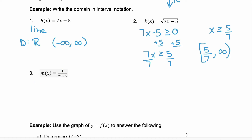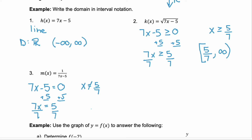Example 3 has a rational expression, so the domain cannot include anything that makes the denominator 0. We set the denominator equal to 0 and solve: add 5 to both sides, 7x equals 5, divide by 7, so x equals 5 sevenths. That's our restriction — x cannot equal 5 sevenths. The domain is from negative infinity to 5 sevenths (parenthesis), union 5 sevenths to infinity (parenthesis), excluding that value.